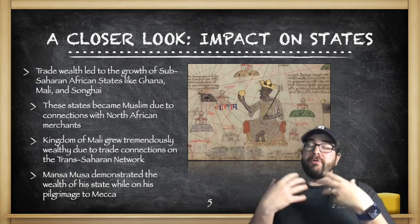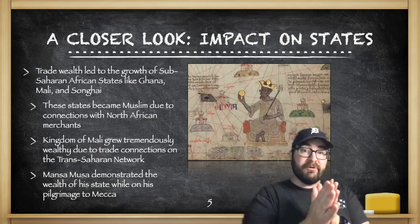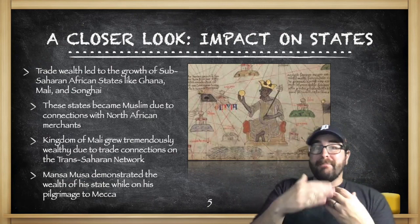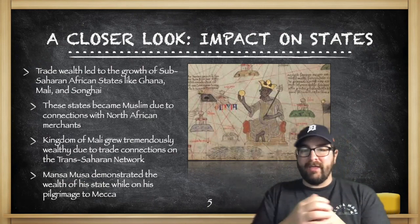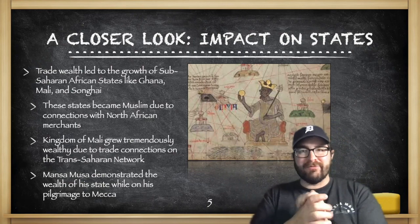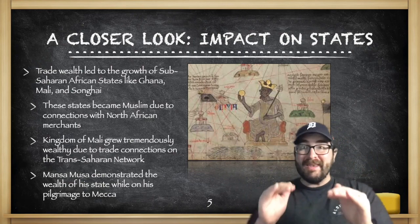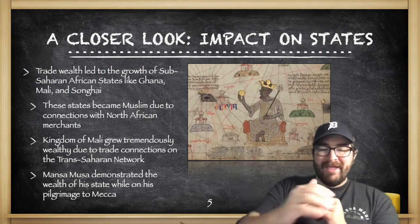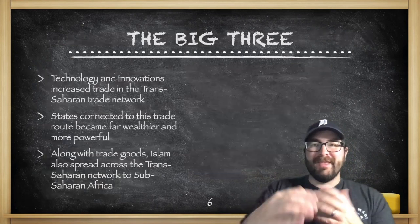The Kingdom of Mali is going to grow tremendously because of their trade connections on the Trans-Saharan Trade Network. That wealth is shown off by Mansa Musa as he takes his pilgrimage to Mecca, and along the way he's going to be throwing gold out to the crowds waiting to see him. Legend says that he actually deflated the value of that gold and caused a bit of a currency crisis in that era.